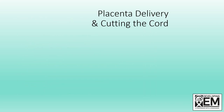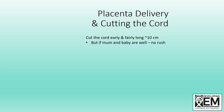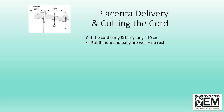Briefly on delivery of the placenta and cutting the cord: if you're in the emergency department it's reasonable to cut the cord early and fairly long — about 10 centimetres is a good rule of thumb, as it gives you plenty of length to insert an umbilical venous catheter, with room for a second attempt if the baby unexpectedly requires resuscitation. However, if mum and baby are doing well, there's no rush. You usually put two clamps on the cord and cut between them.